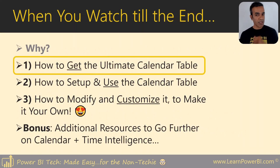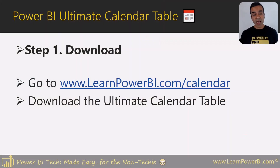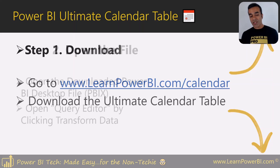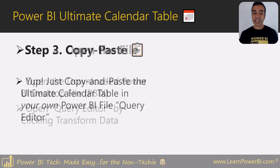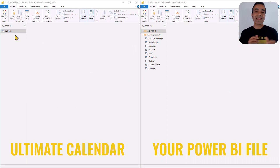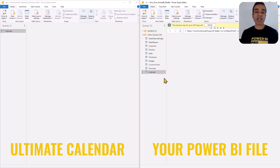Now we understand why we need the calendar table — let's talk about where you can get it. You can get the ultimate calendar table in just three easy steps. Step one: go to the URL on the page and download the ultimate calendar table — a link is also in the video description. Step two: open the downloaded Power BI Desktop PBIX file and open the query editor by clicking the Transform Data button. Step three: open the query editor in your own PBIX file, then right-click and copy the calendar table from the downloaded file, and paste it into the query editor of your own model.